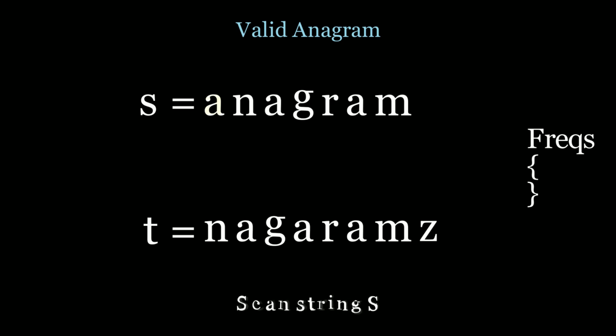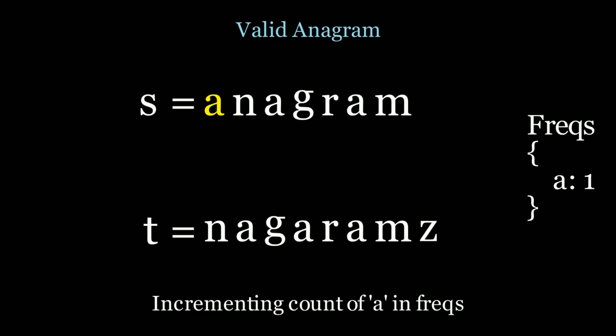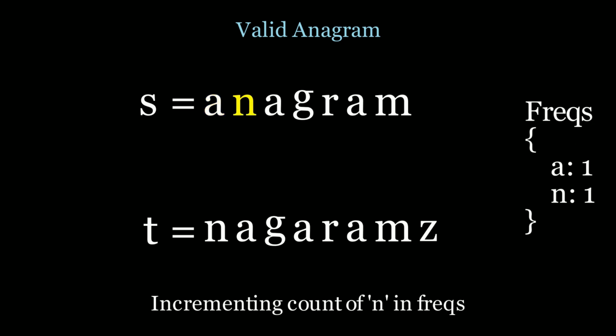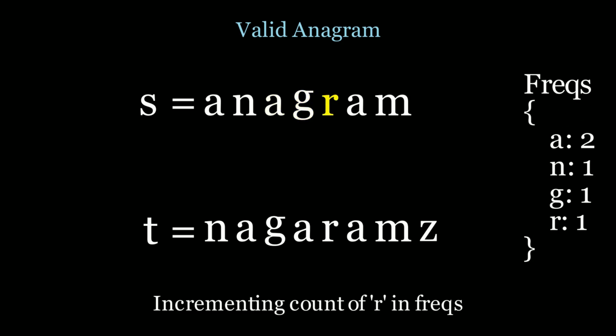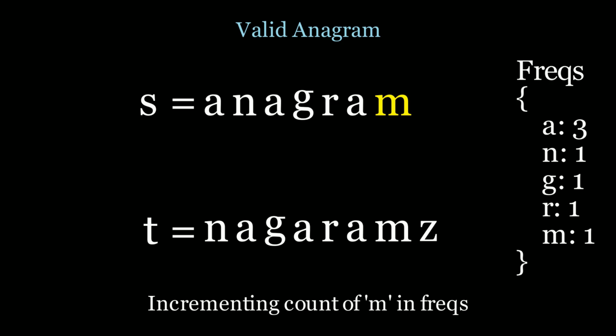We scan the first letter 'a' and update the frequency count — since we haven't seen 'a' before the count was zero, so we add one. We continue scanning: 'n' gets added as one, then 'a' again increments to two, then 'g', 'r', and another 'a' bringing it to three, and finally 'm'. After scanning all of s, we have five distinct characters — a, n, g, r, m — with frequencies three, one, one, one, and one.